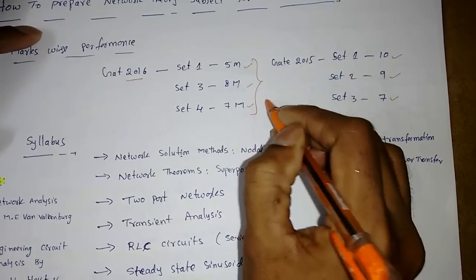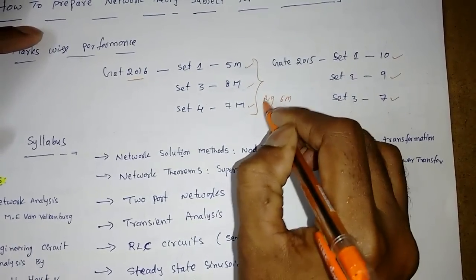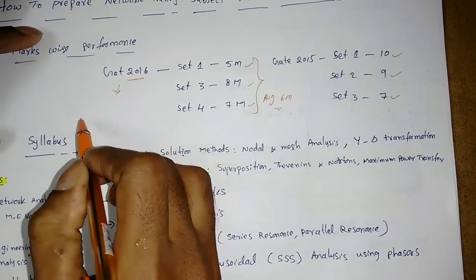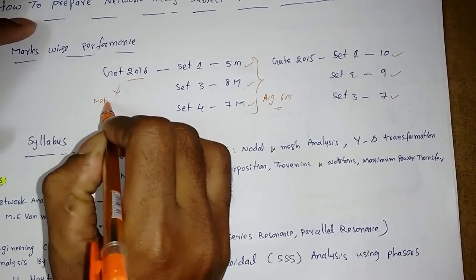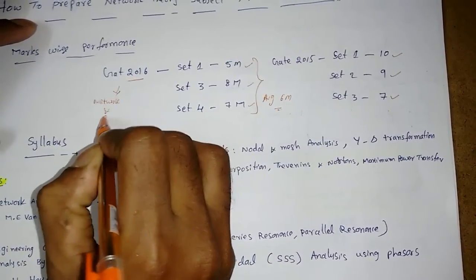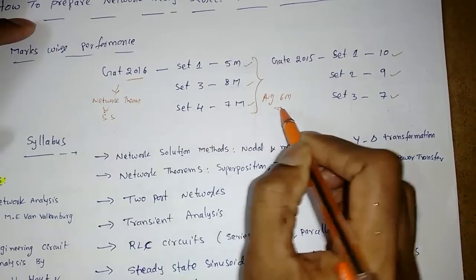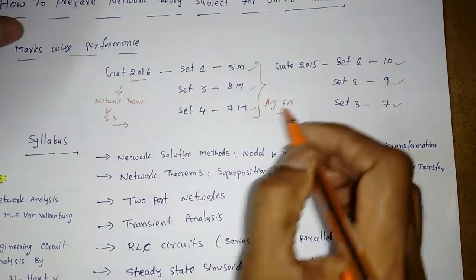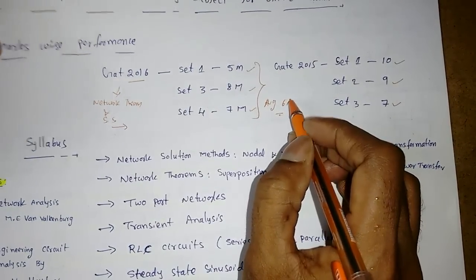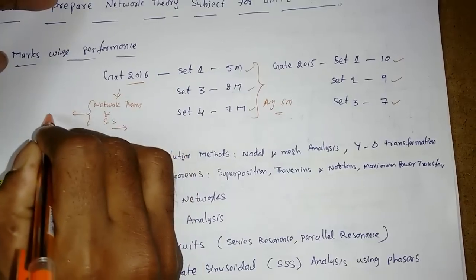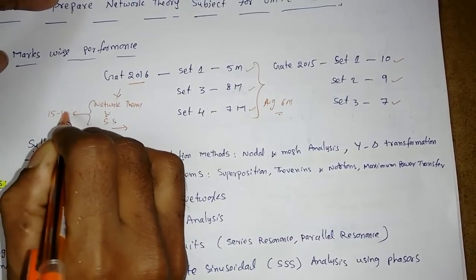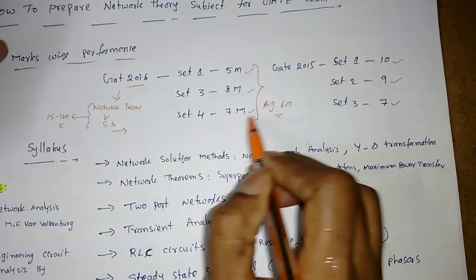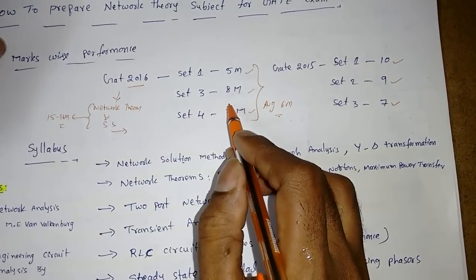Here we can say the average marks is six marks. Why it is reduced is because the subject includes network theory and signals and systems together. If we are getting less marks here, we will get more marks in signals and system. Averagely you can get six to eight marks in each subject.